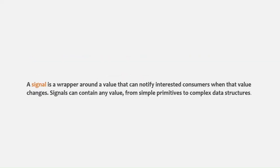By definition, a signal is a wrapper around a value that can notify interested consumers when the value changes. A signal can contain any value — it can contain simple primitive values or it can also contain complex data structures like arrays or objects. Don't worry if this definition does not make any sense right now; you will understand this when we start creating and using signals in our Angular application.